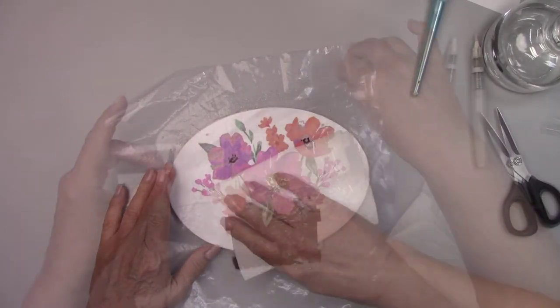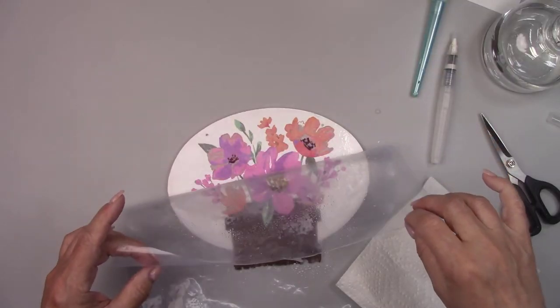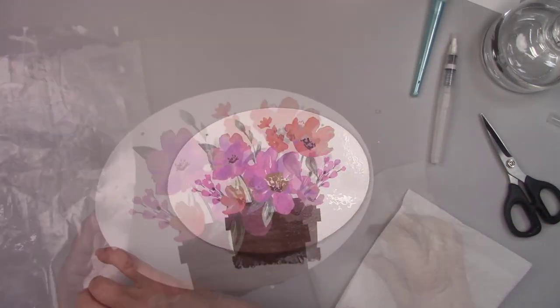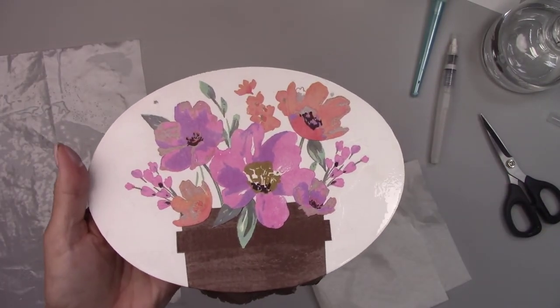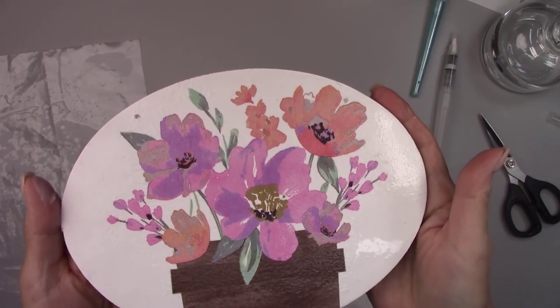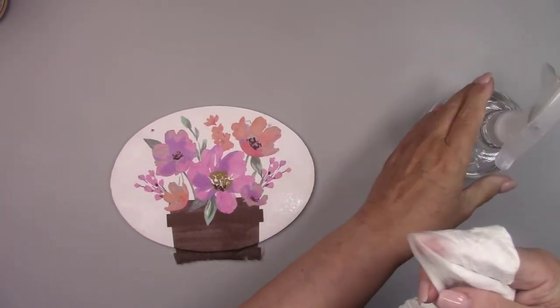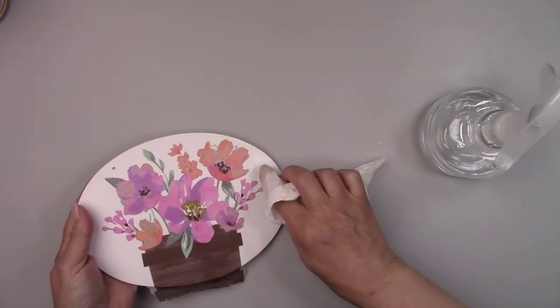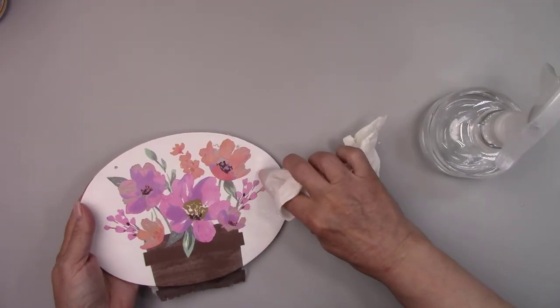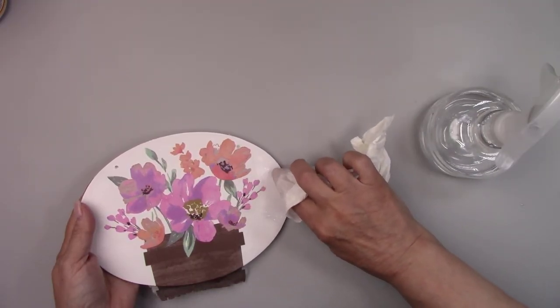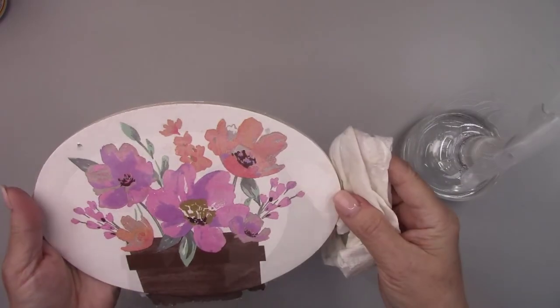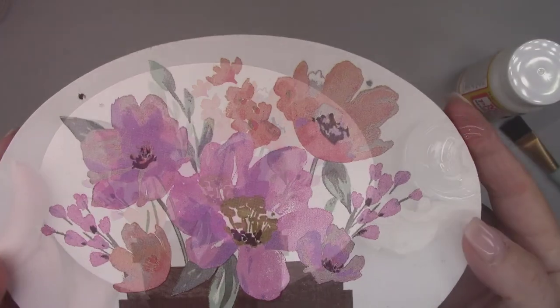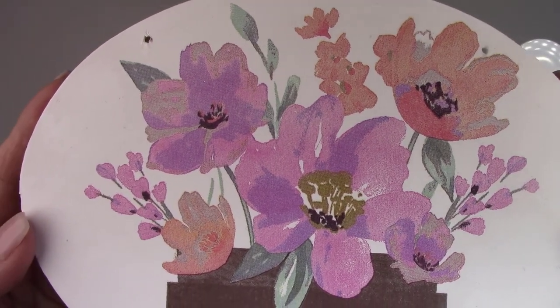Don't worry about any small wrinkles. The napkin shrinks slightly when drying and that removes all of the tiny wrinkles. Anything that hangs over the edge just leave it at this point. Once it dries we'll remove it. If you do need to make any touch-ups around the edges after you remove the plastic use a wet paper towel and do it very carefully. Don't even try to touch up anything other than the edges. It's dry now and there's not one wrinkle.